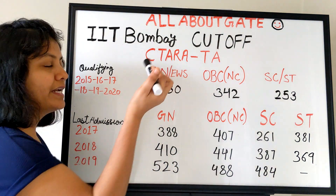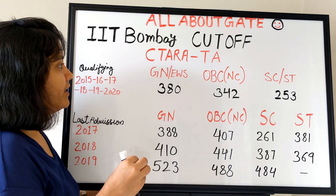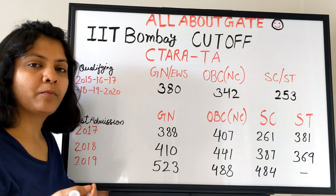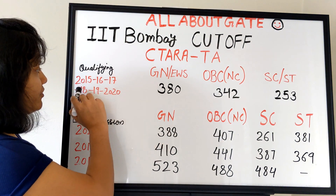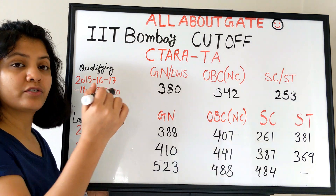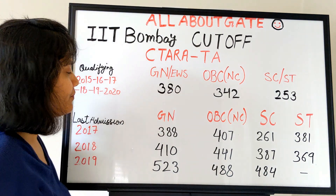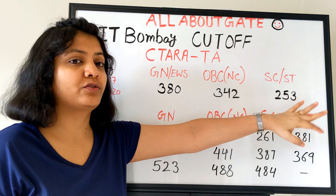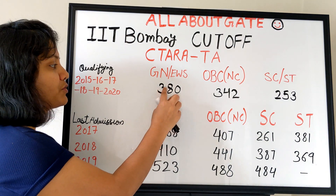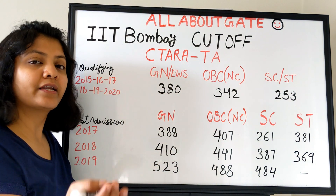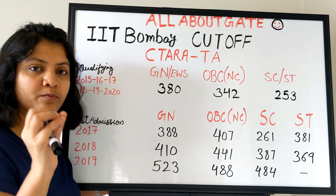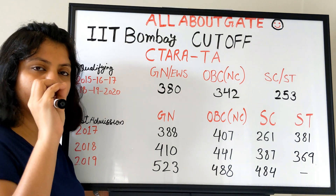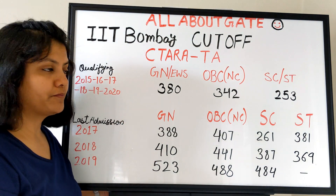CITARA takes admission under the TA category. The minimum qualifying cutoff to apply — consistent for all years from 2015 to 2020 — is: General category 380, OBC non-creamy 342, SC/ST 253. Anyone with a score of 379 in the General category cannot apply for this program. This is the minimum score required to be eligible to apply for this department.